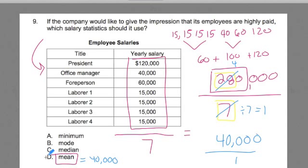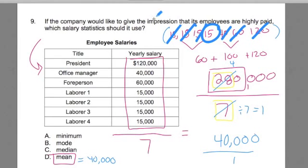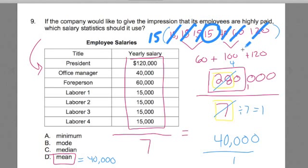What about the median? Since we've already ordered our numbers from lowest to greatest, the median is the middle number. We go through the data set and cross out the first and last numbers, keep going until we reach the middle number, which is 15,000. If there were an even number of data points — say 8 numbers — the median would be the sum of the two middle numbers divided by 2. But here, the median is 15,000.